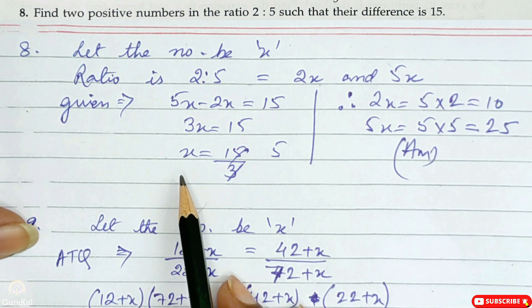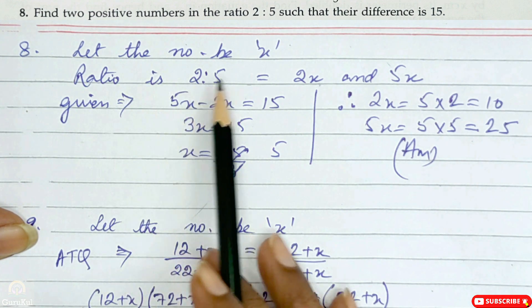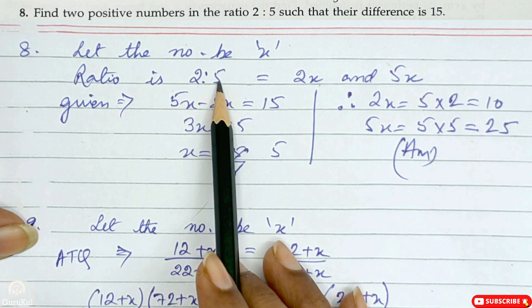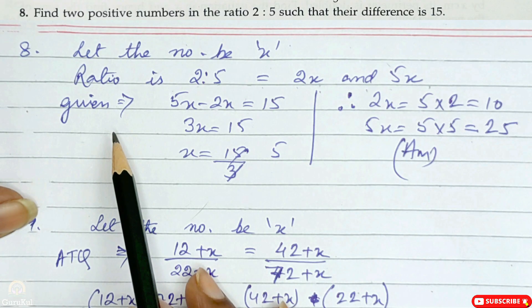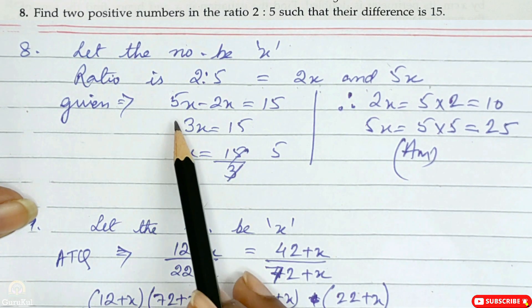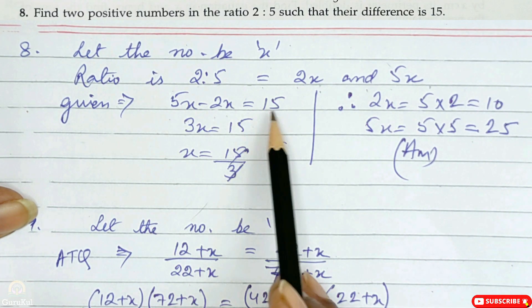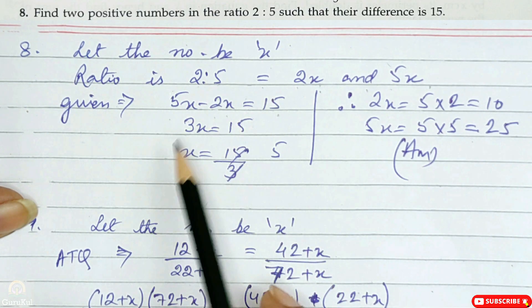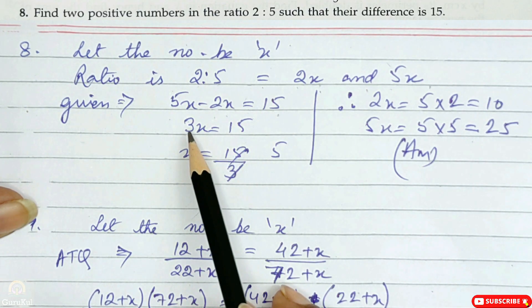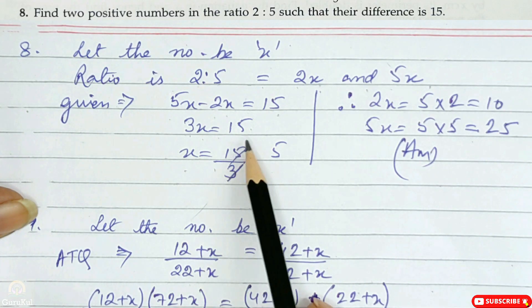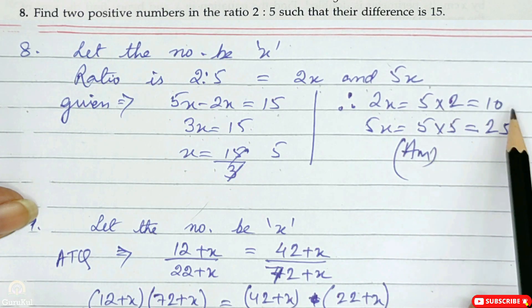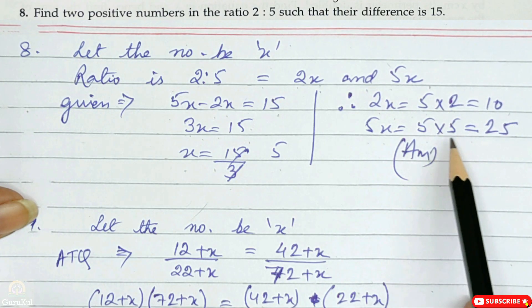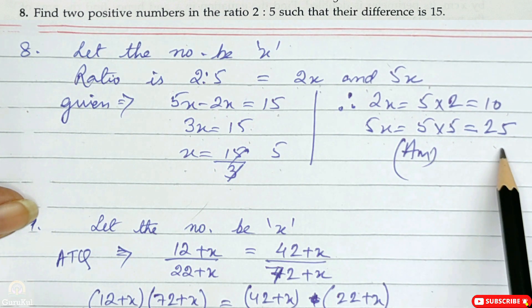Question number 8: Find two positive numbers in the ratio 2:5 such that the difference is 15. Let the number be x; then the two numbers are 2x and 5x. The difference is 15: 5x minus 2x is equal to 15. So 3x is equal to 15, and x is 5. Therefore 2x is 10 and 5x is 25. This is the answer.